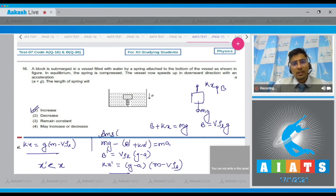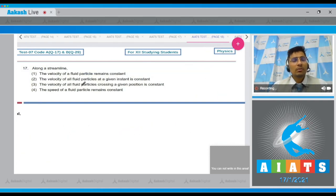For this question the correct answer is option number 1. Now let us solve question number 17. In question 17 there are four options given related to streamline motion. We have to find out which of them is correct.